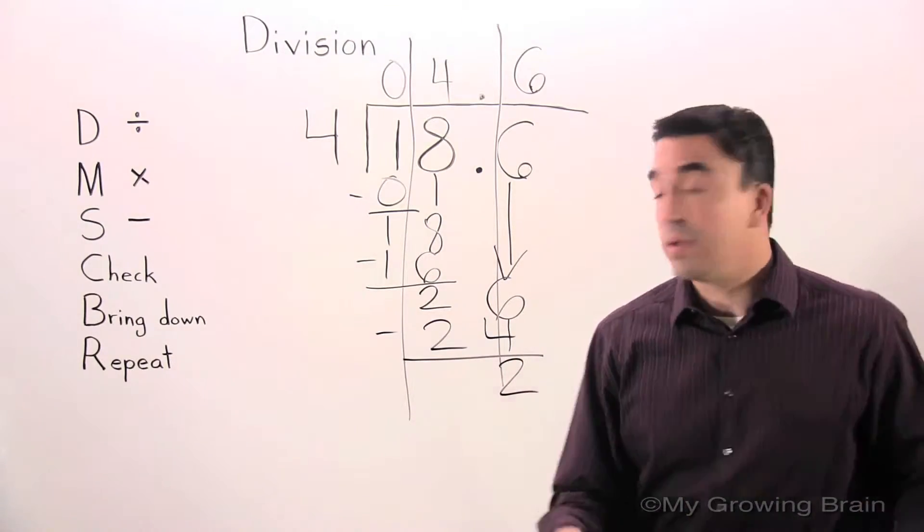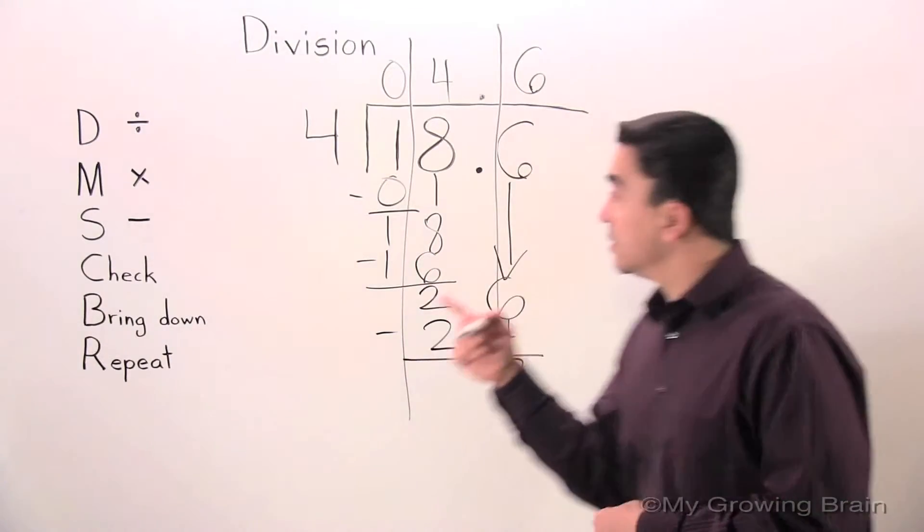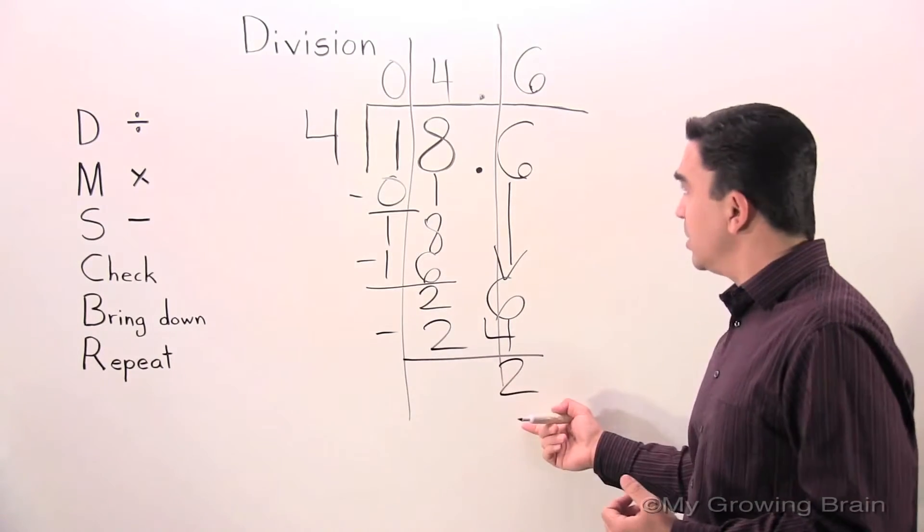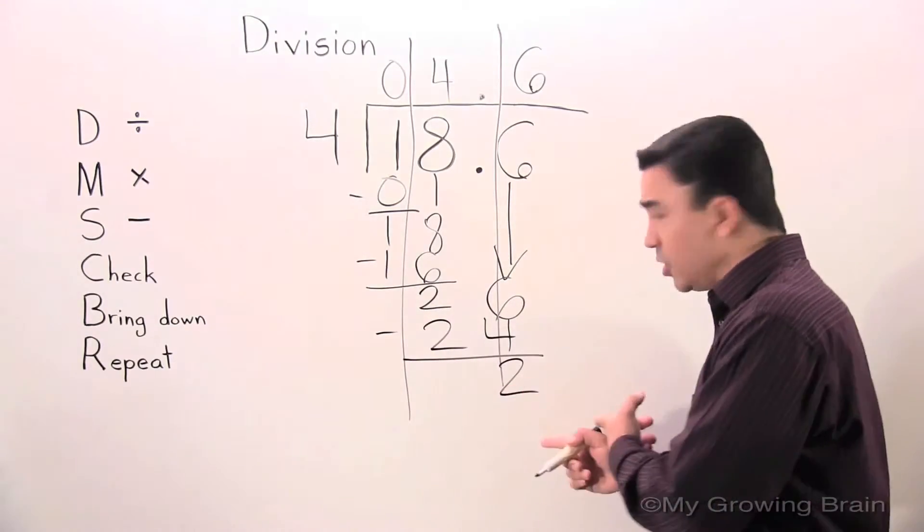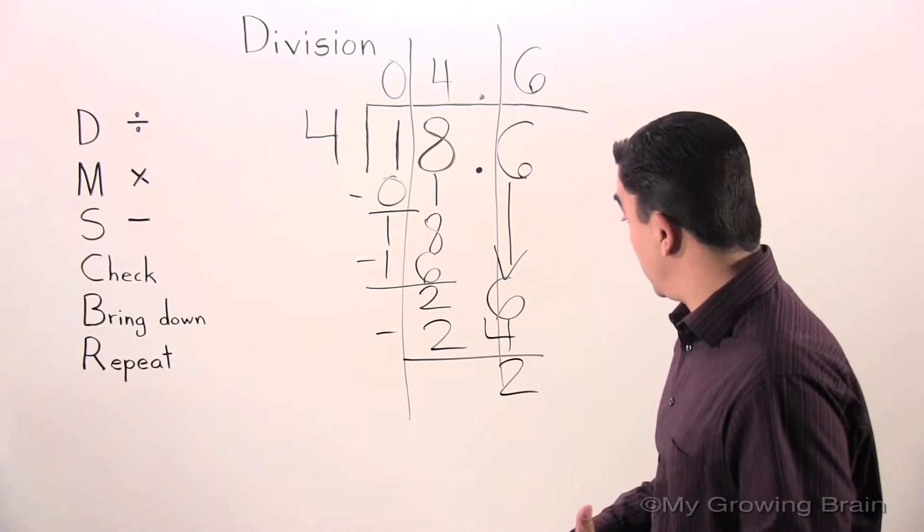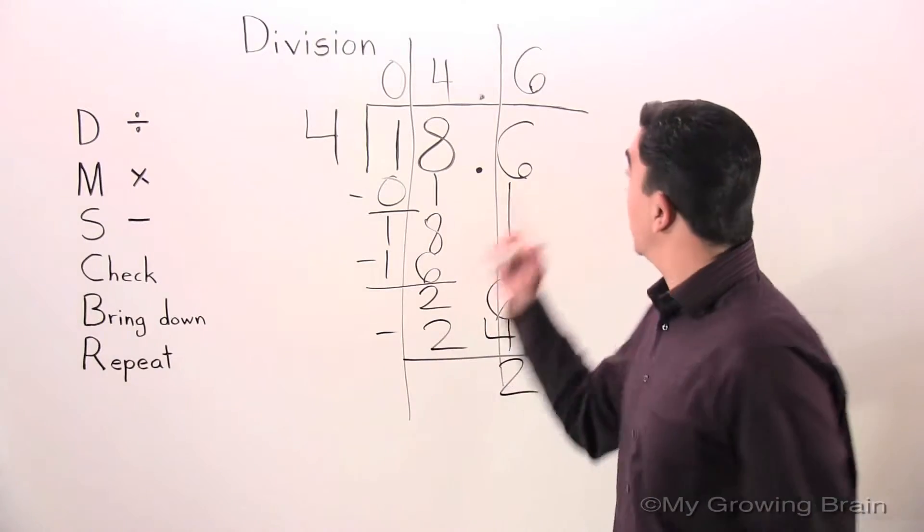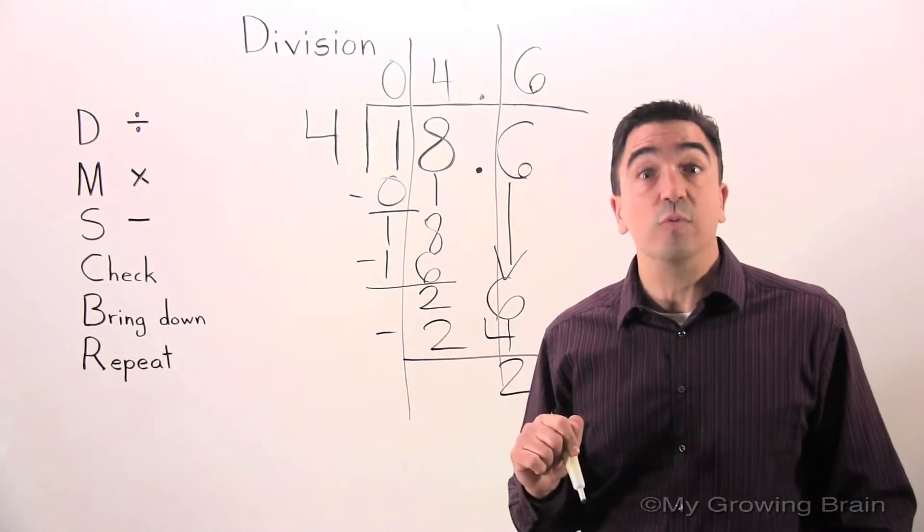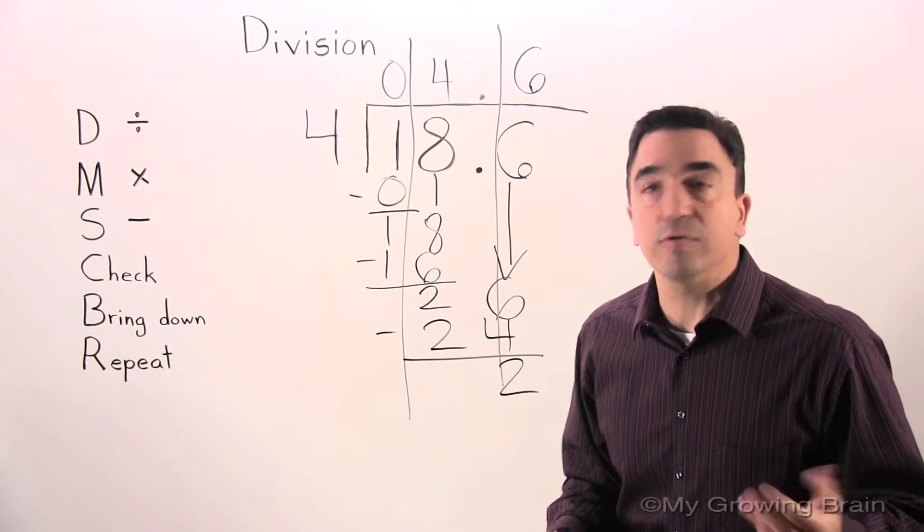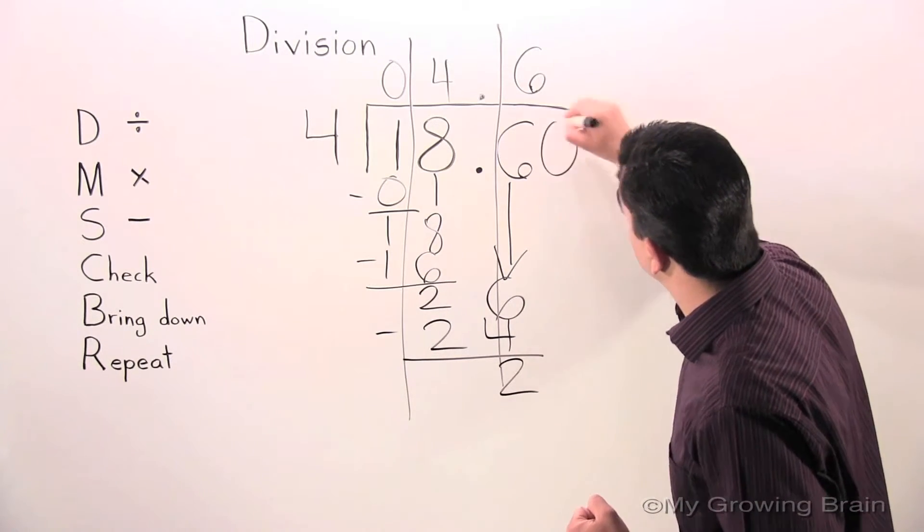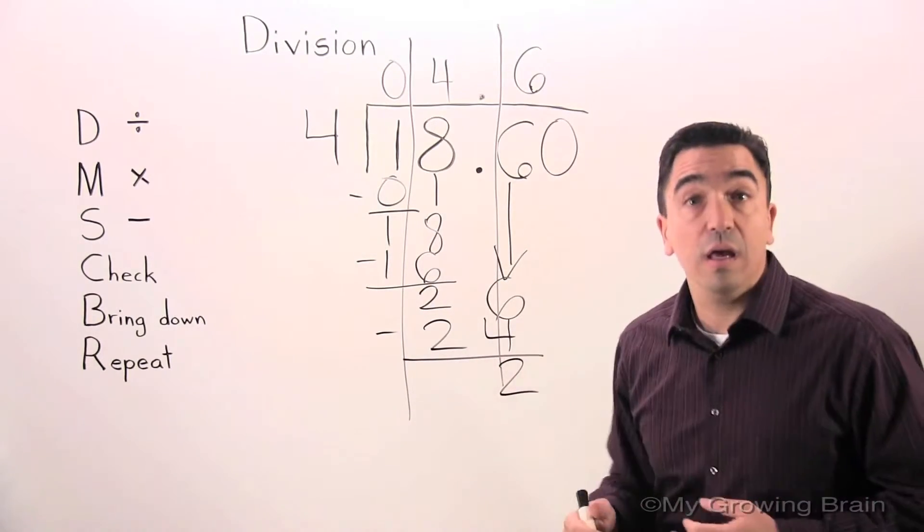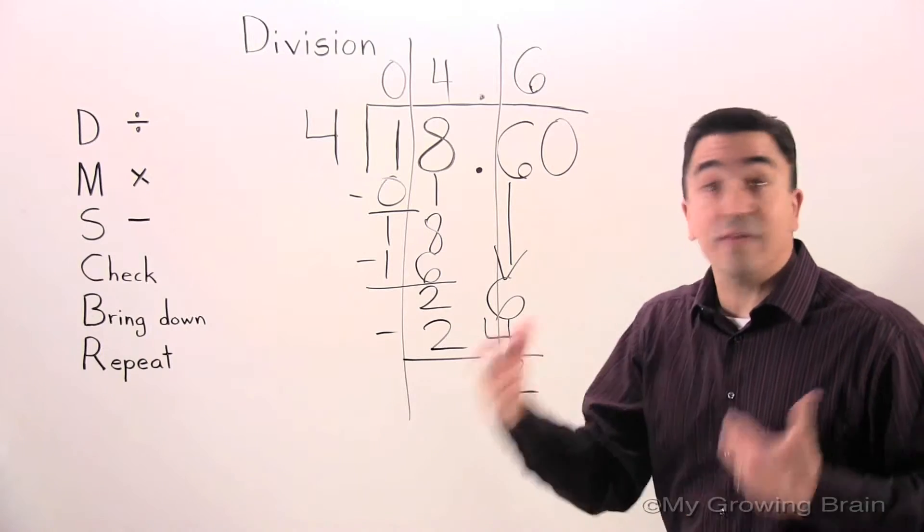Next step: bring down. I can't bring down and 2 is less than 4. Therefore, 2 is the remainder. Now, if 2 is the remainder, well, we can't have a remainder when we have decimals, when we're dividing with decimals. Therefore, I'm just going to add another 0 to the problem. Another 0 into the dividend. And look, the decimal doesn't change. Let's keep going.